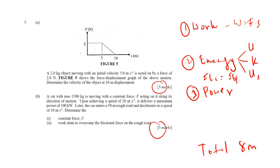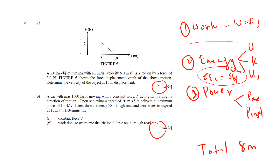For power, there are two types: average power and instantaneous power. Students are often confused about which equation to use because there are too many equations. That's why you need to do a lot of practice — after enough practice, you'll recognise the question type immediately: work, conservation of energy, or power.